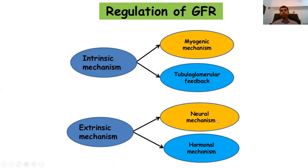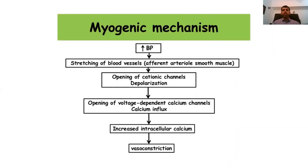From outside the kidney, the nervous system and hormones regulate the glomerular filtration rate. Regarding the intrinsic myogenic mechanism: if blood pressure suddenly shoots up, it causes stretching of the smooth muscle cells of the afferent arterioles, opening cationic channels and causing depolarization. This results in a large influx of calcium into the smooth muscle cells, causing vasoconstriction, which reduces the amount of blood transmitted to the glomerulus.